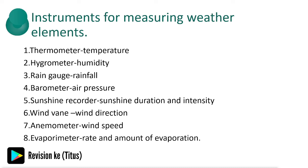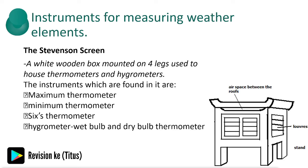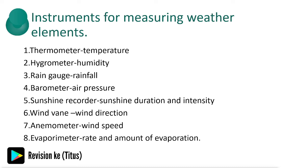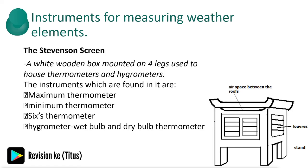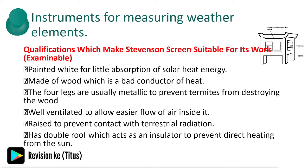Some of these instruments are quite small and need a housing, which we call a Stevenson screen — a white wooden box mounted on four legs, used to house thermometers and hygrometers. We can't house a wind vane inside it. The qualifications which make a Stevenson screen suitable — and this is examinable — are: it's painted white for little absorption of solar heat energy; it's made of wood which is a bad conductor of heat; the four legs are metallic to prevent termites from destroying the wood; it's well ventilated to allow easy flow of air inside; it's raised to prevent contact with terrestrial radiation; and it has a double roof which acts as an insulator to prevent direct heating from the sun.